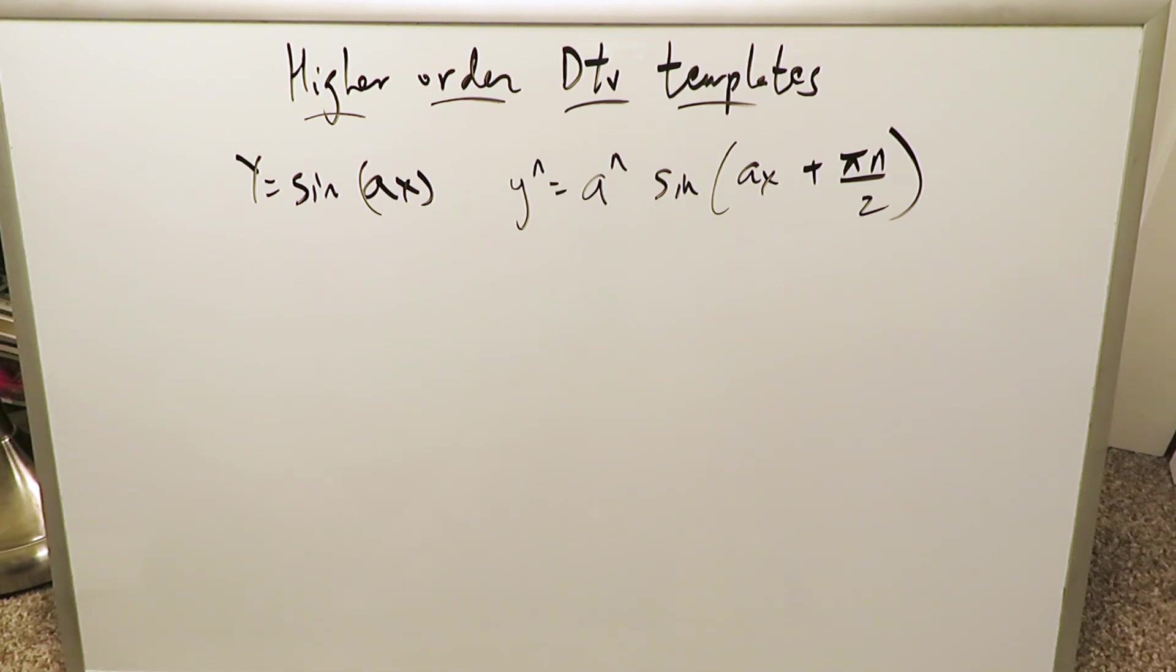What are these higher order derivative templates? Well here's an example for a sine function but the similar template here is equivalent for a cosine function.